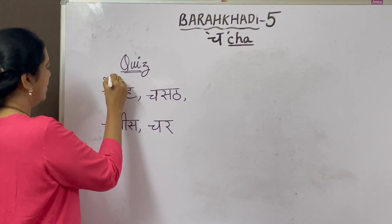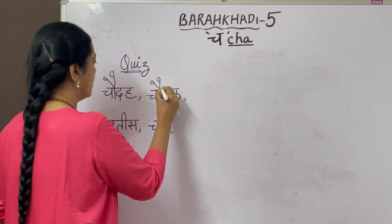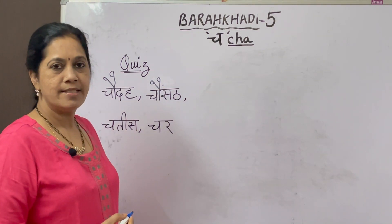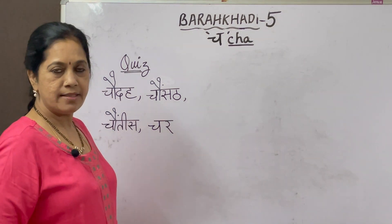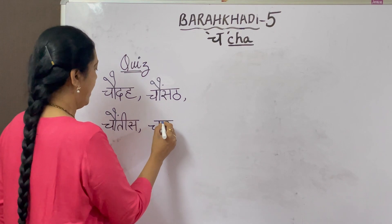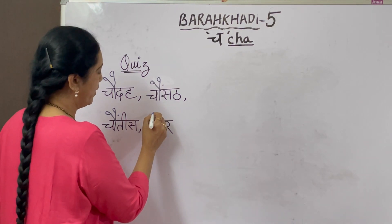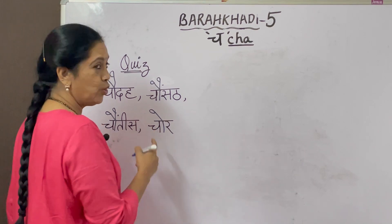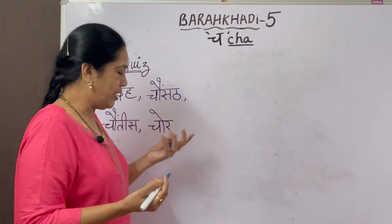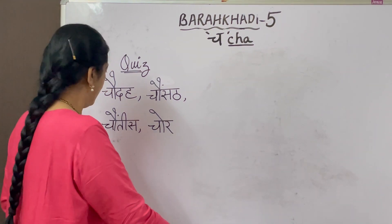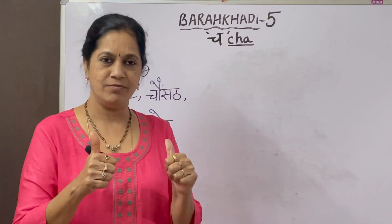The first one is Chadha, means 14. Then this is cha set cha set - 64. And this is chauntis - 34. And this is char - 4. Char means four, chore means thief, so either char or chore is correct. Both are correct. I think it's quite easy to solve and one or two of you had given it in the comment box - wonderful, keep rocking.